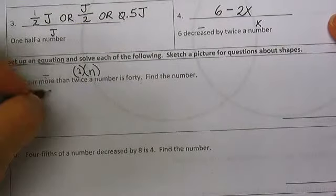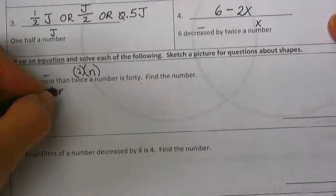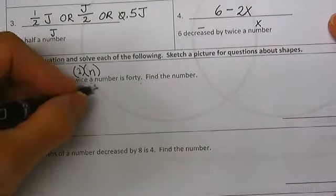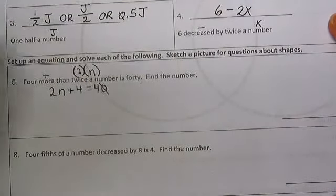Twice a number, that's 2 times n. Four more plus 4 is equal to 40. There is our equation.